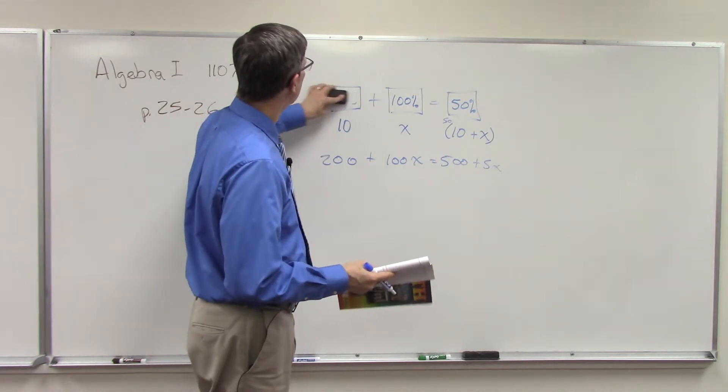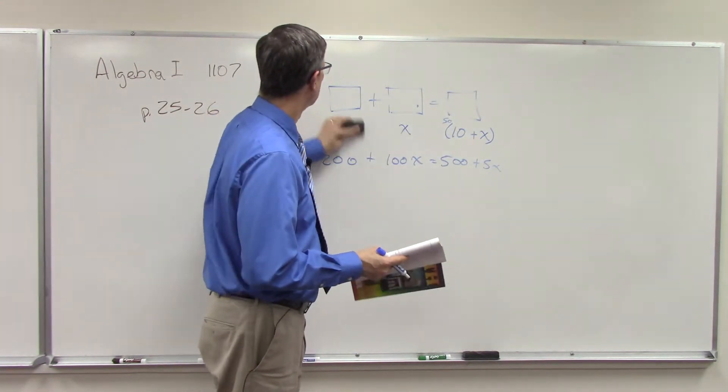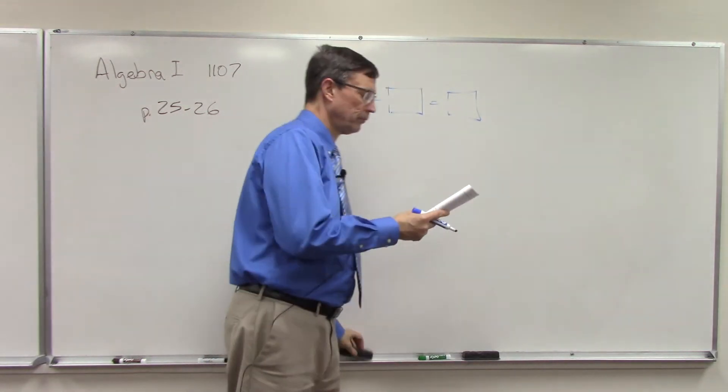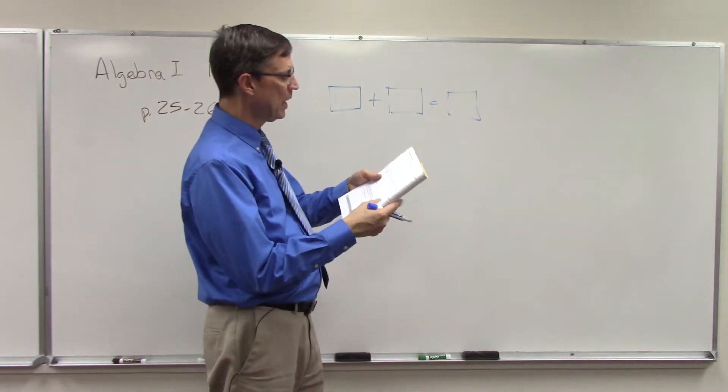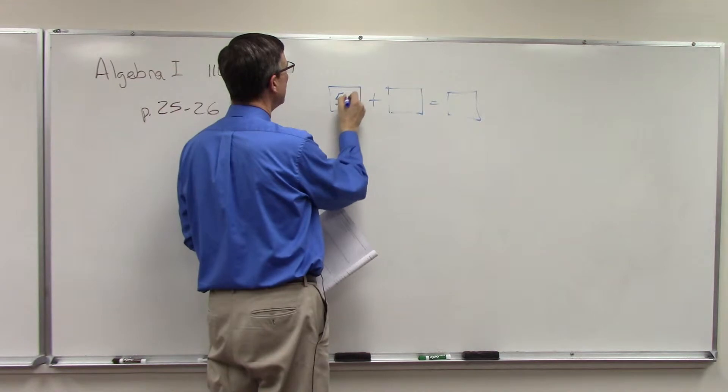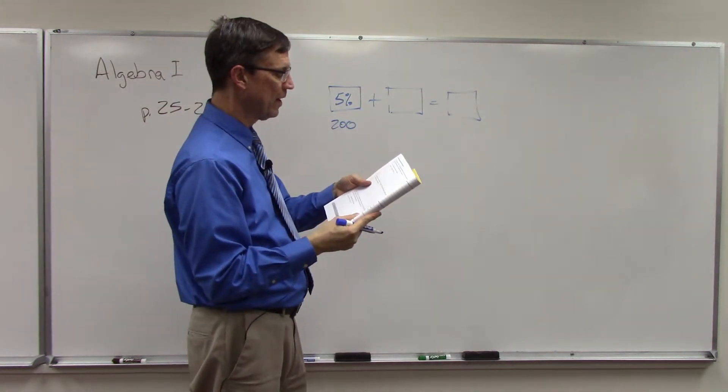Let's set up the next one. I like to leave the boxes because basically I'm going to do it the same way. Number six: the dairy has 200 liters of milk that's 5% dairy fat, so 200 liters, 5%.